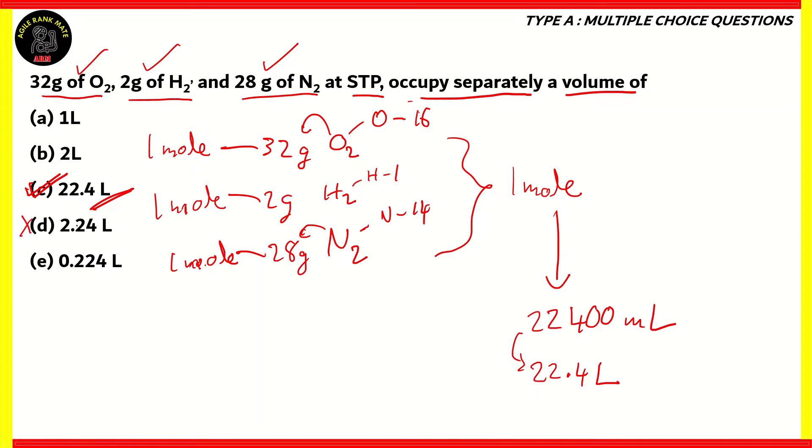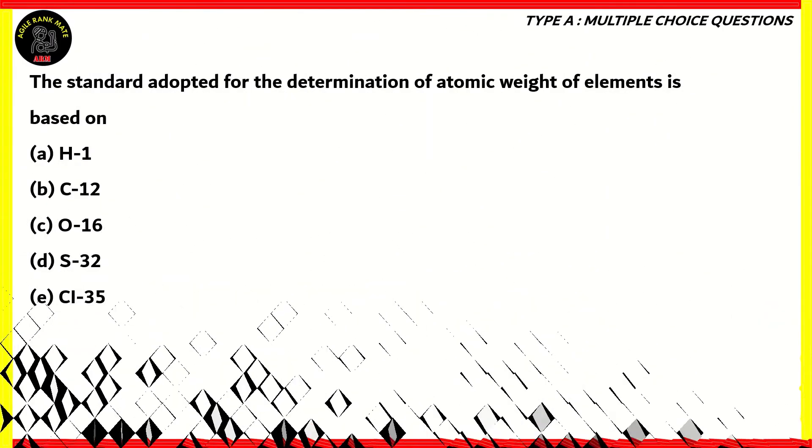2.24 would be incorrect because it is divided by 10,000. 0.224 would be divided by 100,000. So again, incorrect. And 1 liters and 2 liters, again, is not correct when it comes to the mole concept. So mole concept is a very important concept, and I urge that you revise it as much as you can, because there are a lot of questions that require converting mass into moles, number of molecules into moles, and also volume into moles as well.